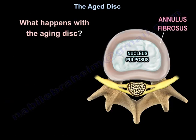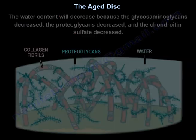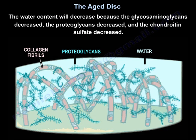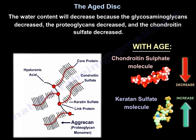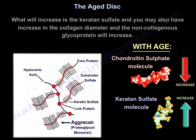So what happens with the aging disc? The water content will decrease because glycosaminoglycans decrease, proteoglycans decrease, and chondroitin sulfate decreases. What will increase is keratan sulfate, and you may also have collagen diameter increase and non-collagen glycoprotein increase.